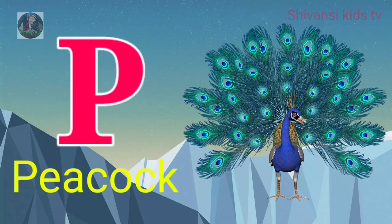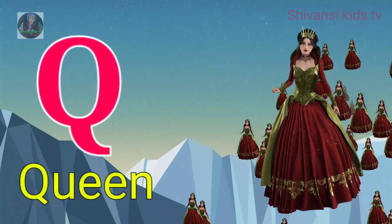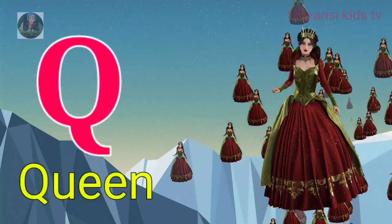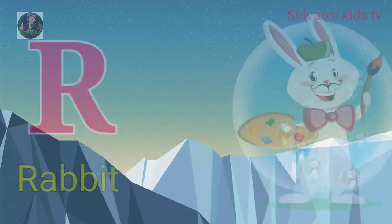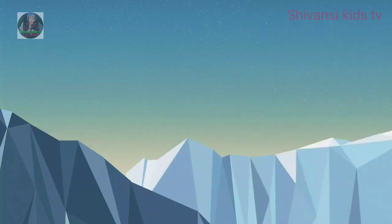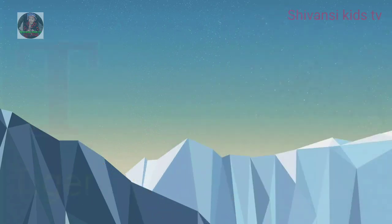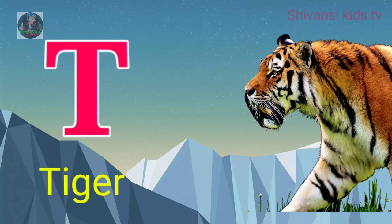P for peacock, Q for queen, R for rabbit, S for sheep, T for tiger.